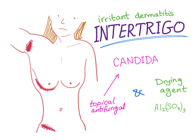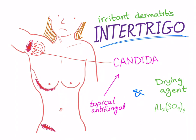Candida can cause a secondary superinfection over these patches. To identify candida involvement, look closely for tiny satellite papules around the lesion that extend beyond its border — those satellite papules are characteristic of candida.